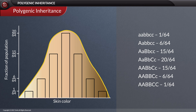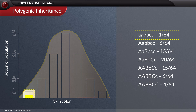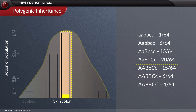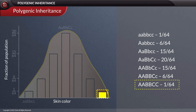Now let us look at the frequency distribution for skin color, which gradually increases from 1/64 for the light color given by AABBCC, to a maximum of 20/64 for the intermediate color given by AaBbCc, and again reduces to 1/64 for the dark color given by AABBCC.